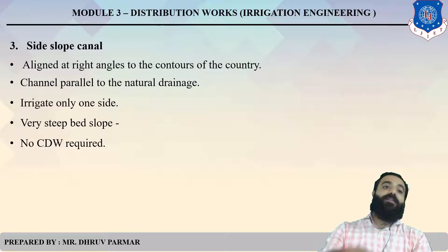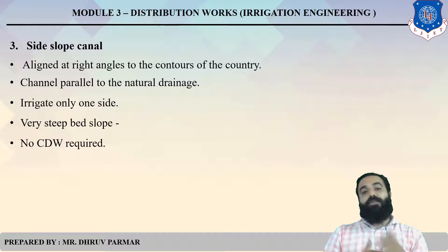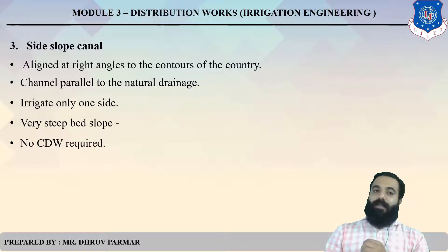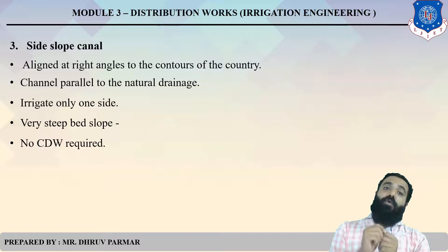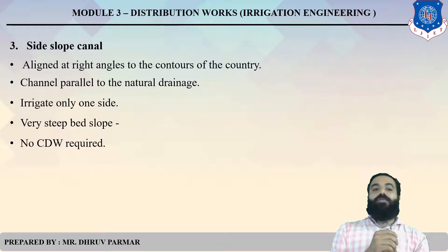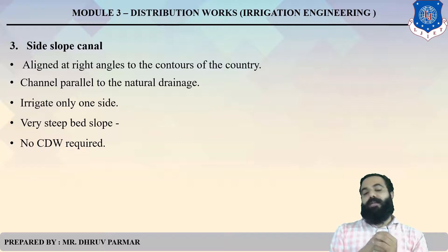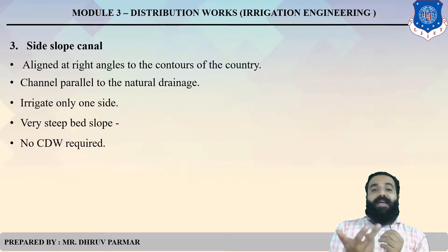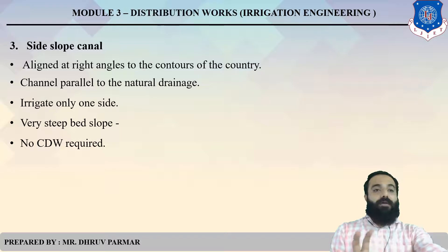The third type is the side slope canal. The canal alignment is directly perpendicular — at a right angle of 90 degrees — to the contour. This canal is parallel to the natural drain and irrigates only one side. In a side slope canal, the slope is very steep, and no cross drainage work is required. In summary: watershed irrigates both sides, while side slope and contour canals irrigate only one side.